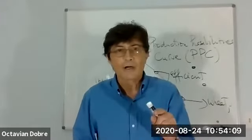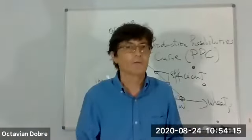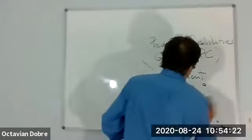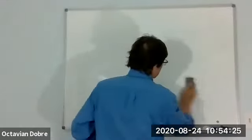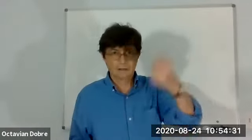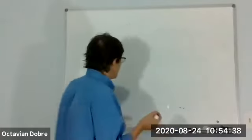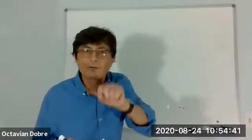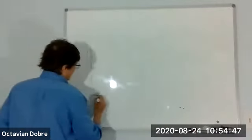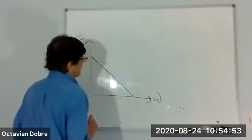When you look in the book in Chapter 2, the production possibilities curve won't look like my straight-line graph — it's going to look a little bit different. Instead of a straight line, it's going to be bowed out.